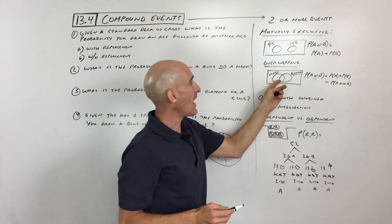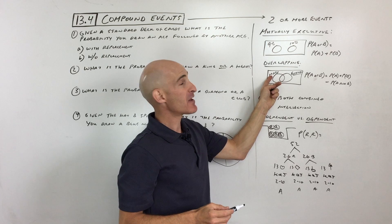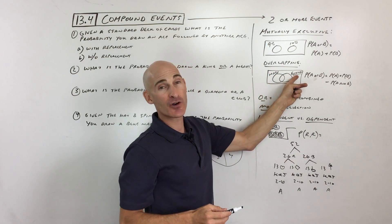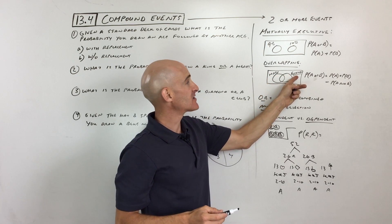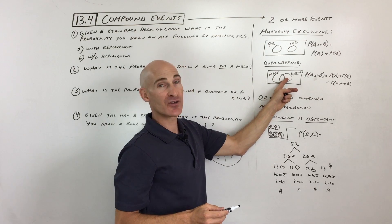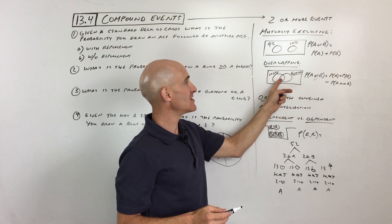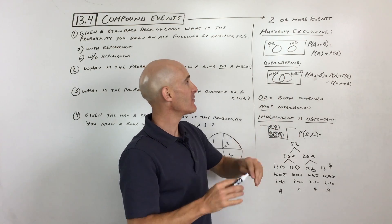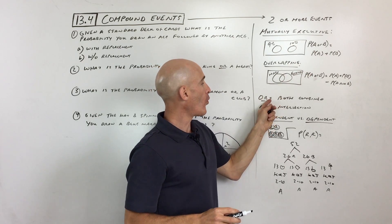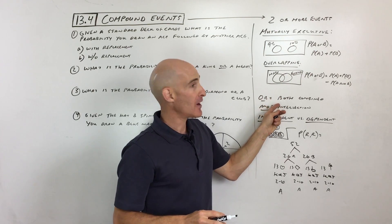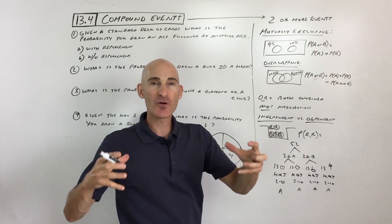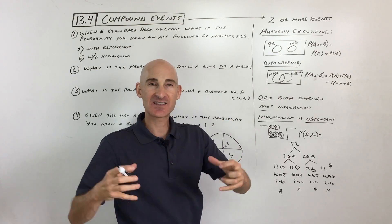Whereas with overlapping, say you take all the people that are in your math class and all the people that are in your English class — at least you are in both your math and your English class. So you can see these events are overlapping. Now, when you use the word 'or' in math, 'or' means both combined — like you're combining the sets.